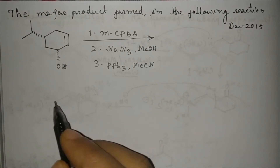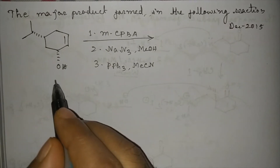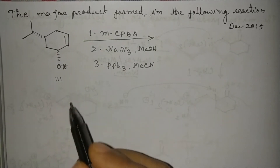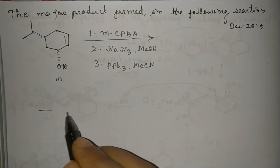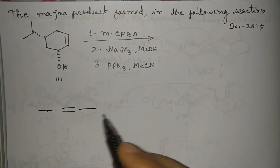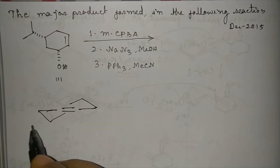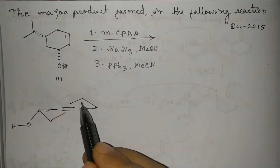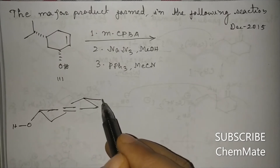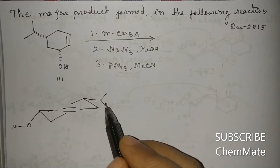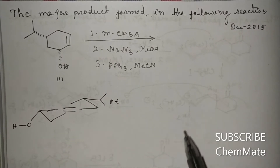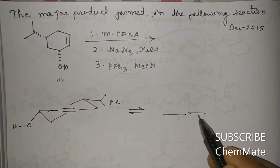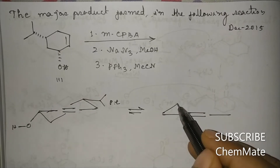This is a cyclohexene system, so it will have a half-chair conformation. If we draw the conformation, the OH group is below the plane. This places it in a pseudo-equatorial position, and it will be in equilibrium with another conformation which we get after ring flipping.